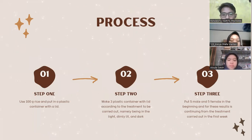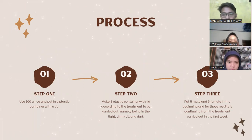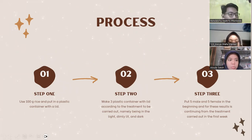So for the process, step one: we use 100 gram rice and put it in a plastic container with a lid. We made three plastic containers with lids according to the treatment to be carried out, namely being in the light, dimly light, and dark.